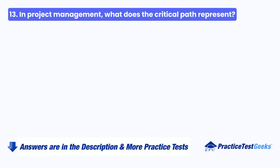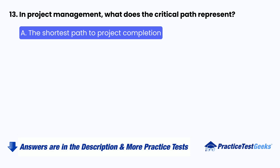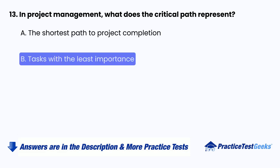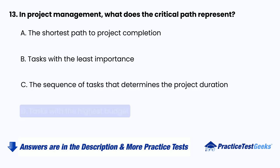Question 13: In project management, what does the critical path represent? A. The shortest path to project completion. B. Tasks with the least importance. C. The sequence of tasks that determines the project duration. D. Tasks with the highest budget.